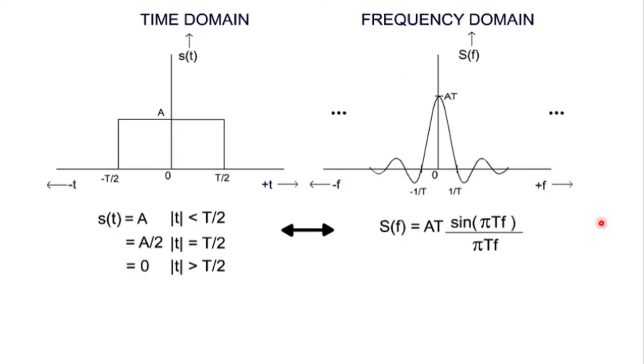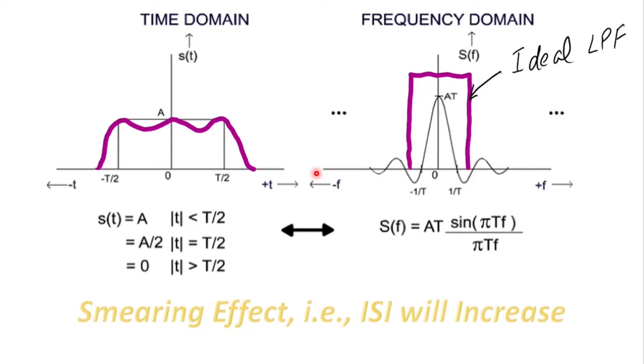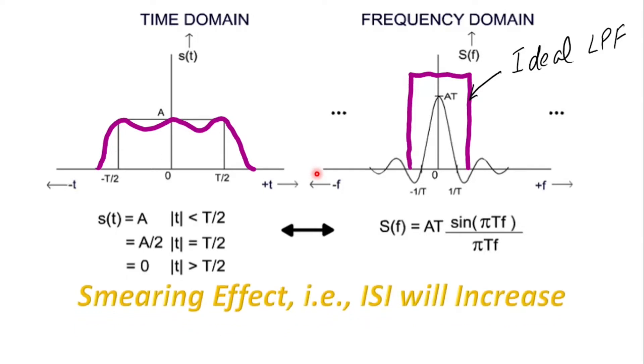So one way to fix is by using a low pass filter. Herein we have considered an ideal low pass filter. But as we achieve a band limited spectrum of S of f, signal in time domain will have a long tail and in fact it will reach infinity in time. Hence the smearing effect that is ISI will increase.